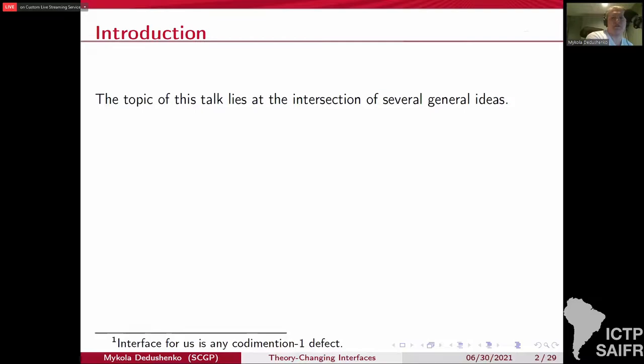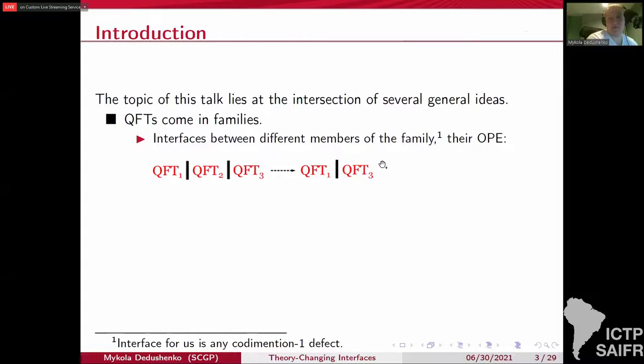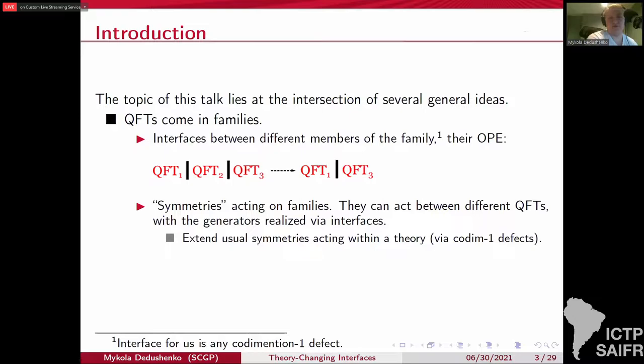The topic lies at the intersection of several general ideas. First, quantum field theories, as any natural objects, they come in families. So it's natural to ask about interfaces between different members of the family, whether they exist. And when they do, you can collide interfaces and see what happens. In particular, this leads naturally to the idea of symmetries or general groups or algebras acting on the families of theories.